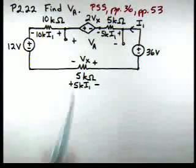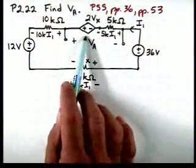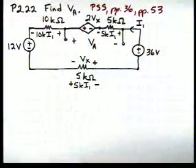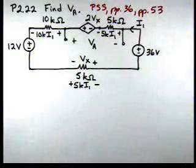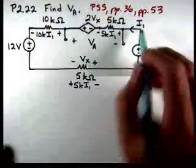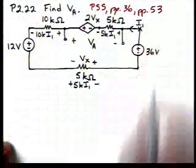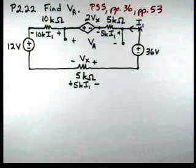This dependent source, we're going to treat it as an independent source and leave it as a variable in terms of VX to begin with. So now, let's start at this corner of the circuit. Let's move around the circuit counterclockwise.